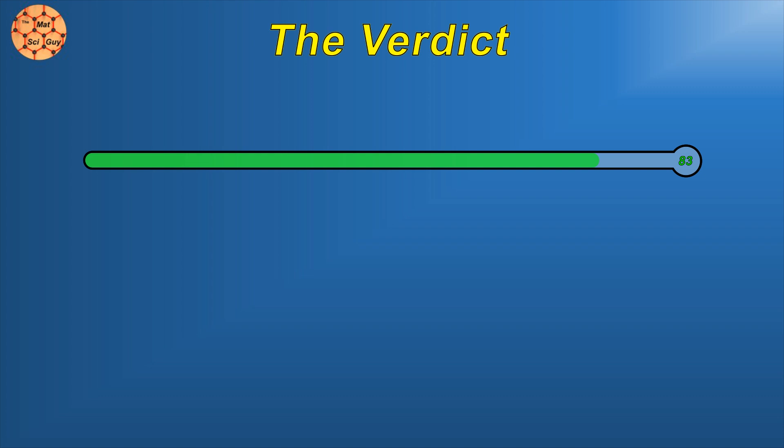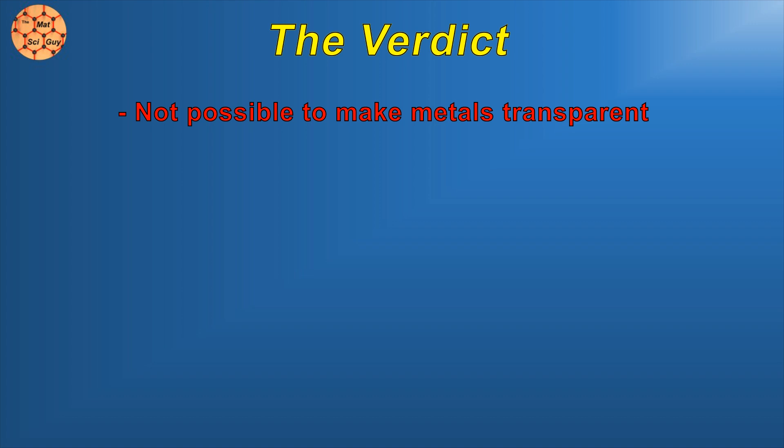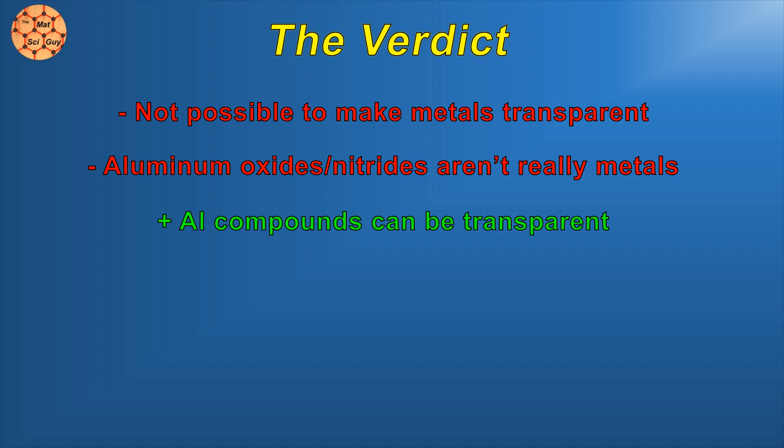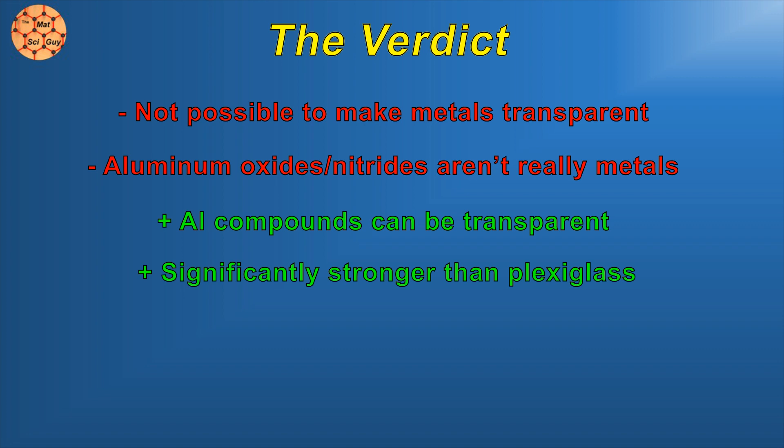Metallic aluminum can never be transparent, and it might be a bit of a force fit to call compounds like aluminum oxynitride transparent aluminum, but they are transparent, and it's amazing that some of the best options for high-strength transparent materials are aluminum compounds. Transparent aluminum isn't highly illogical after all.